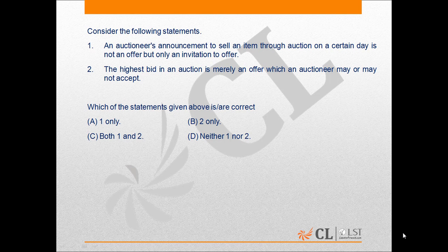This is question number 153. There are two statements. Statement number one: an auctioneer's announcement to sell an item through auction on a certain day is not an offer, but only an invitation to offer. Statement two: the highest bid in an auction is an offer which an auctioneer may or may not accept. Here, both the statements are true, so the correct answer will be C.